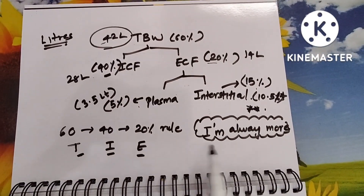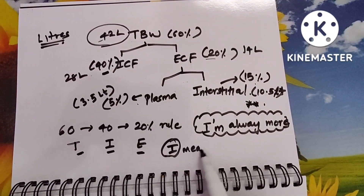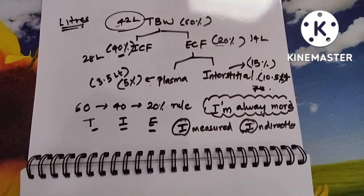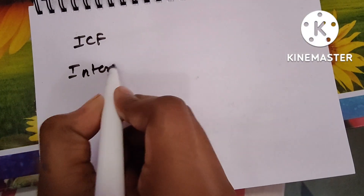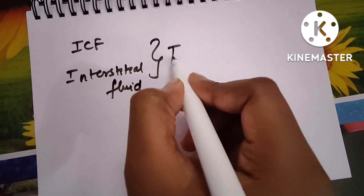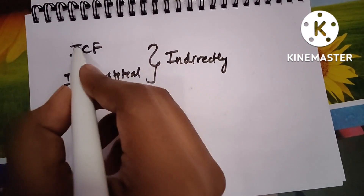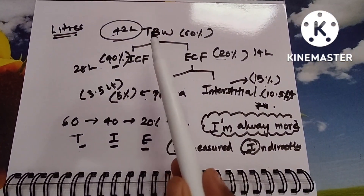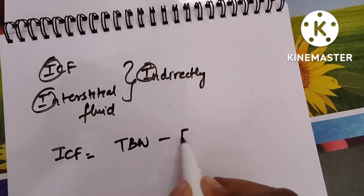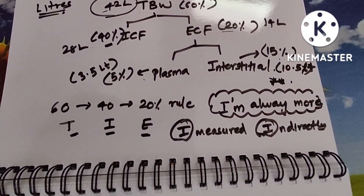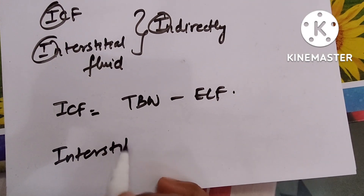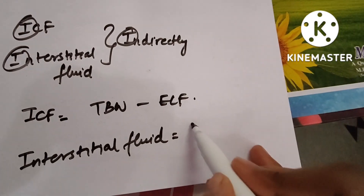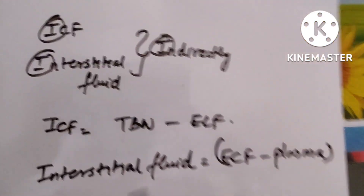Both I's — ICF and interstitial fluid — are measured indirectly, as there are no direct components to measure them. ICF is calculated using the formula: ICF = TBW − ECF. Interstitial fluid is calculated as: Interstitial fluid = ECF − Plasma volume. That is, you subtract the 5% plasma from the 20% ECF to get interstitial fluid at 15%.